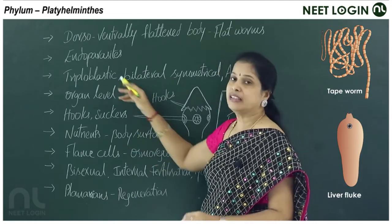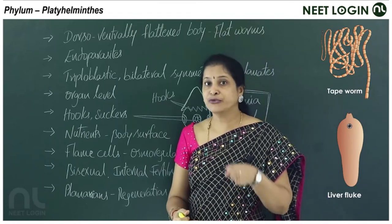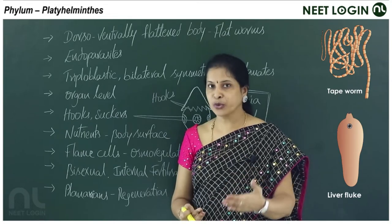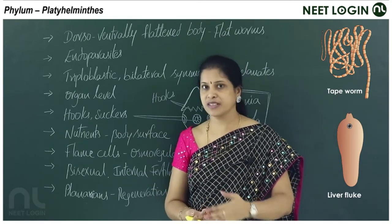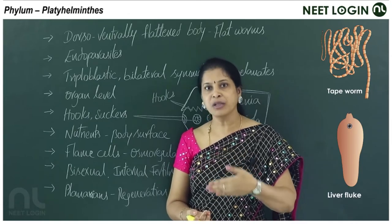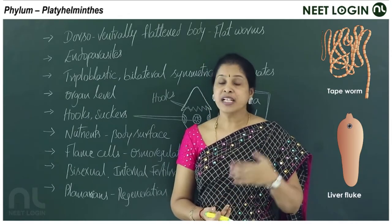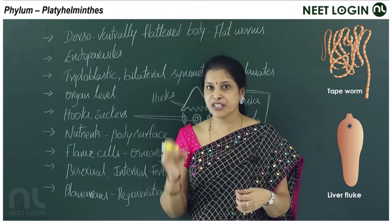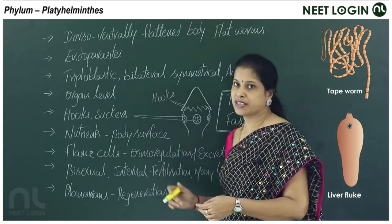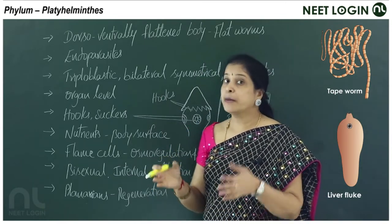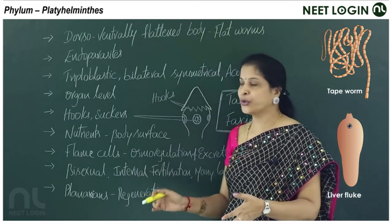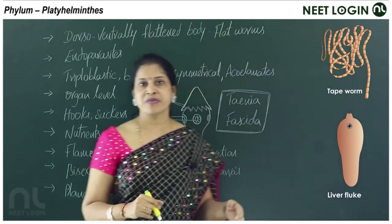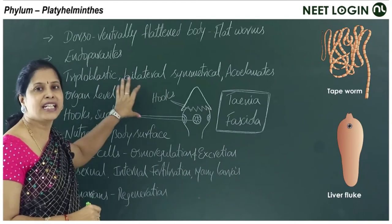Platyhelminthes are the first triploblastic animals — their body has three germinal layers: outer ectoderm, middle mesoderm, and inner endoderm. The mesoderm is responsible for increased complexity. They are bilaterally symmetrical and acoelomate — no coelom. The level of organization is the organ level.